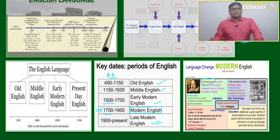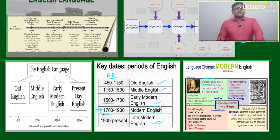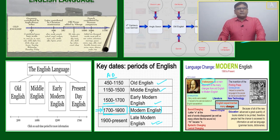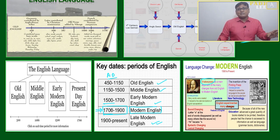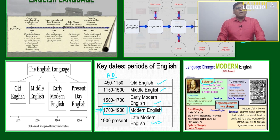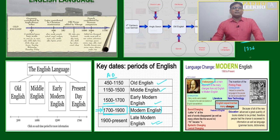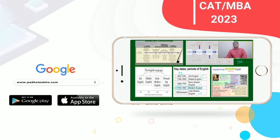We need to focus on understanding Modern English and Late Modern English. Keep this timeline in mind, because during these 200 years all scientific, literature, and artistic development happened — it was a drastic change in modern human civilization. One landmark was in 1776 when James Watt invented the steam engine, which became the root cause for the development of all science and technology.